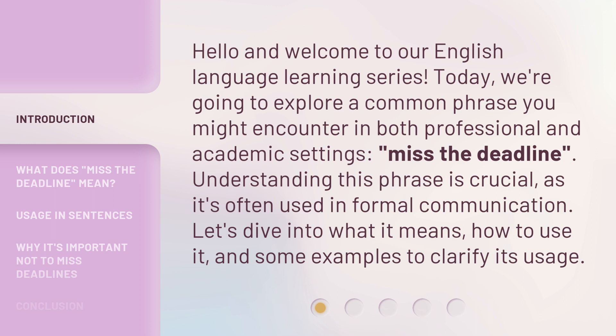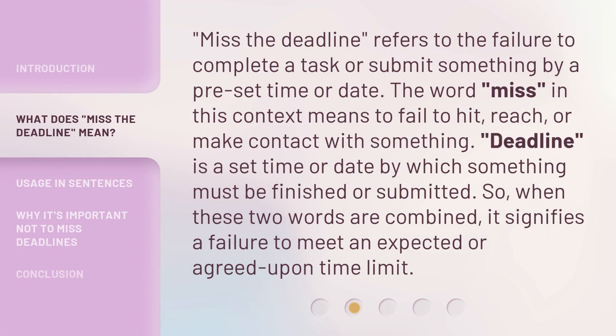Let's dive into what it means, how to use it, and some examples to clarify its usage. 'Miss the Deadline' refers to the failure to complete a task or submit something by a pre-set time or date. The word 'miss' in this context means to fail to hit, reach, or make contact with something. 'Deadline' is a set time or date by which something must be finished or submitted. So when these two words are combined, it signifies a failure to meet an expected or agreed-upon time limit.